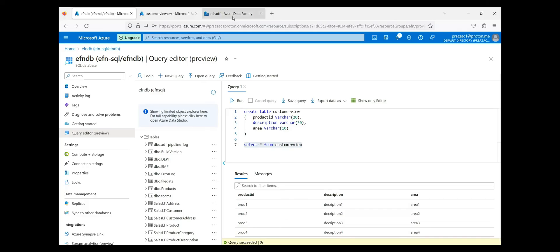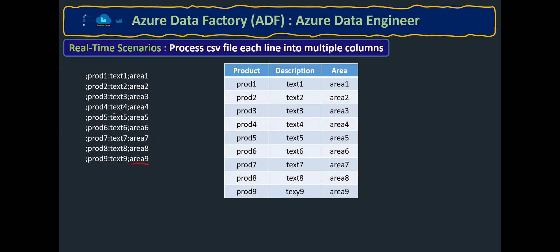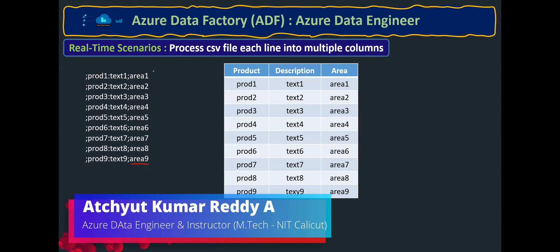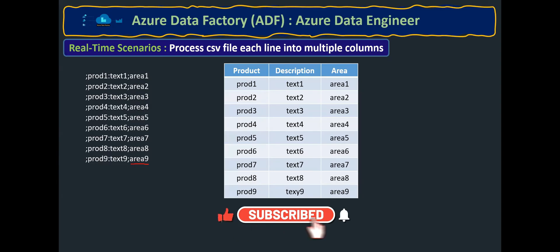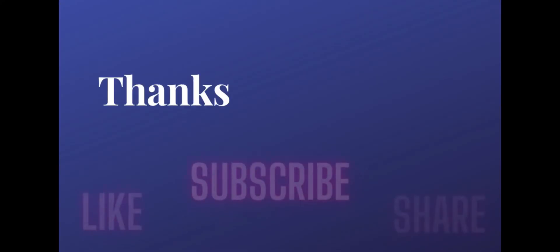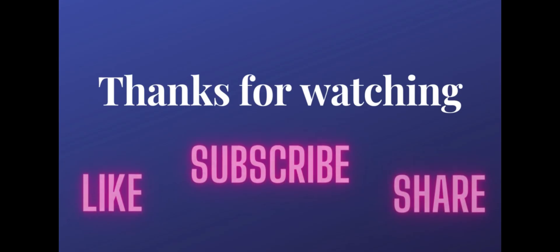This covers a very common real-world requirement — data arriving in a CSV or text file in an unstructured form but following a specific pattern, where each line needs to be formatted accordingly so that the corresponding data is placed in the correct columns. Hope you understand this scenario. Thank you very much for watching — please like, subscribe and share the video.